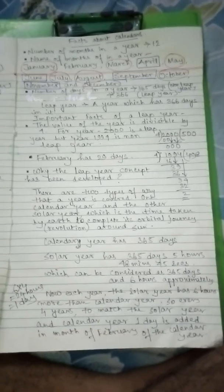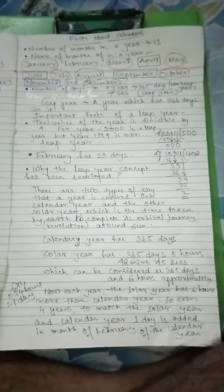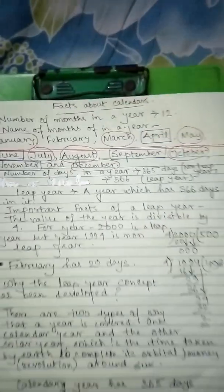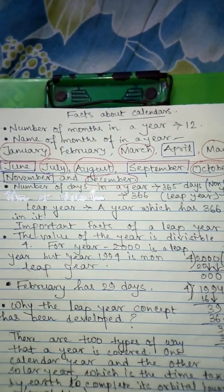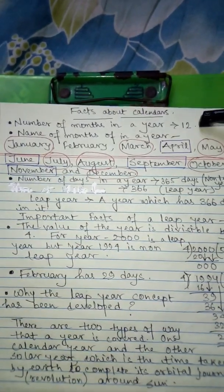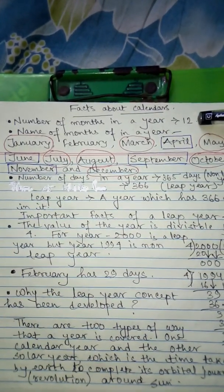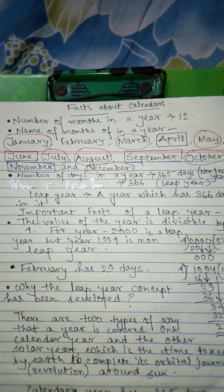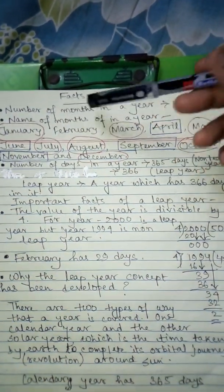Good morning students. Today we are going to learn facts about the calendar. The first thing we have written is the number of months in a year. The number of months in a year is 12, and the names of the months we have written in the next section.